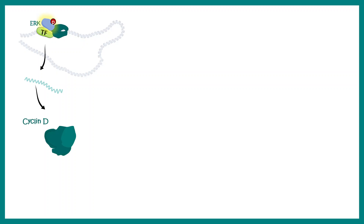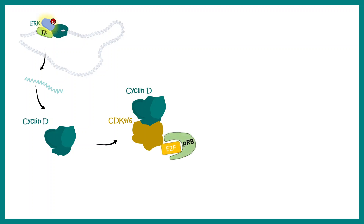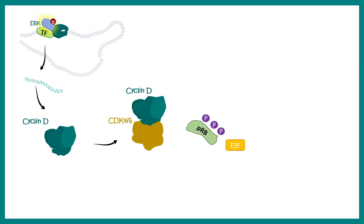Once cyclin D is produced, it interacts with its CDK partner, that is CDK4 or CDK6. Cyclin D eventually phosphorylates the pRB protein. pRB, under normal circumstances, holds the E2F protein — which is an important transcriptional modulator — thereby preventing it from performing its transcriptional activity. But cyclin D phosphorylates pRB and allows the release of E2F.